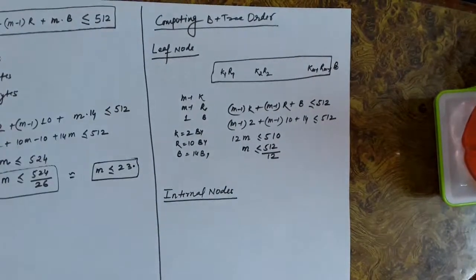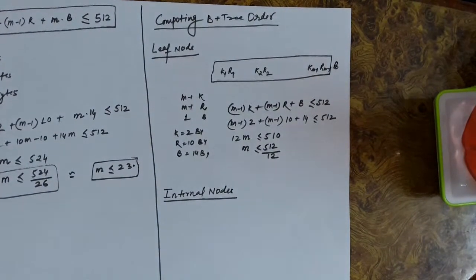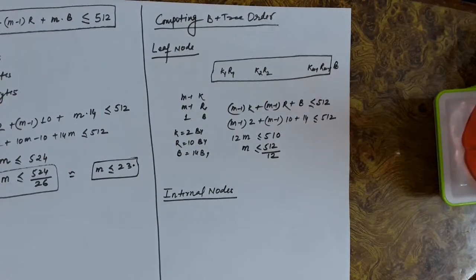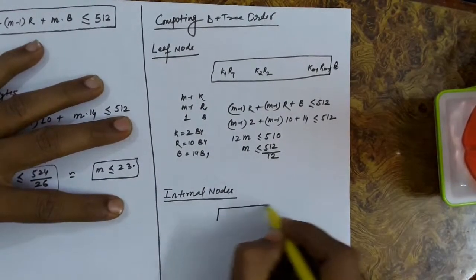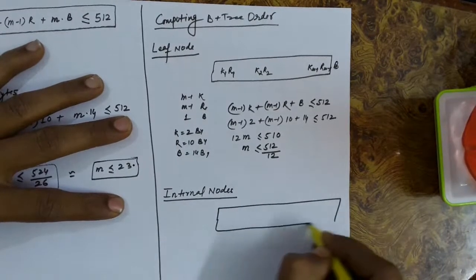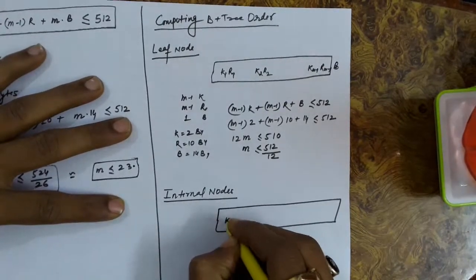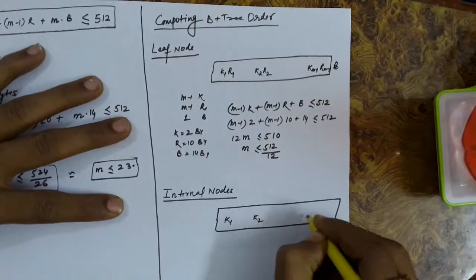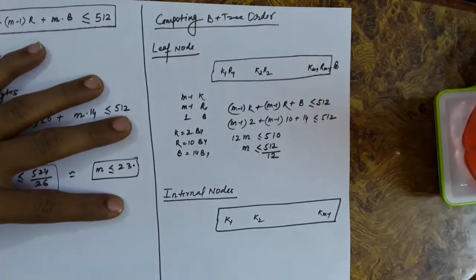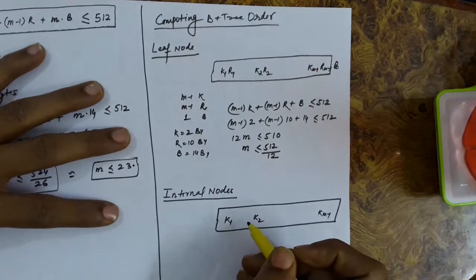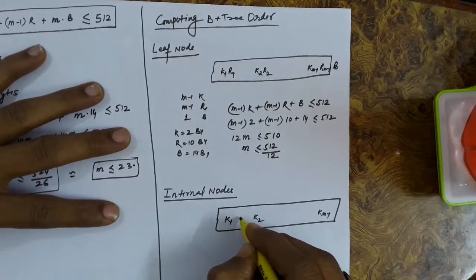Now about the internal nodes. In the internal nodes, we do not store the record addresses, because internal nodes are just indexes — they are not data nodes. So we do not need to store the record addresses there. The internal node will be keeping the key values and the addresses of the children.